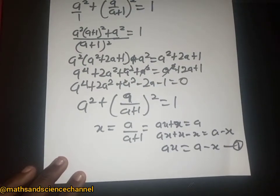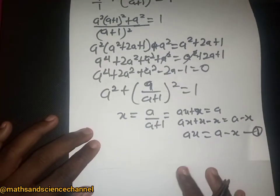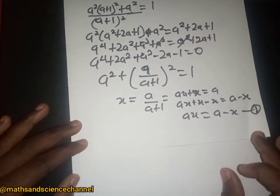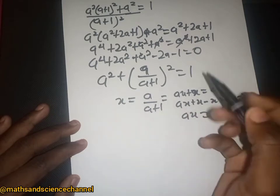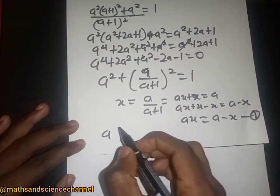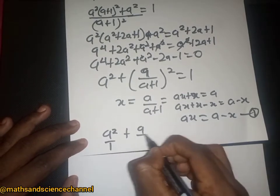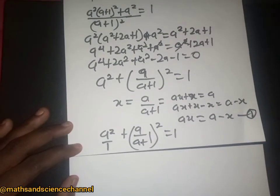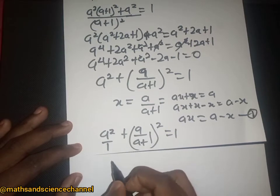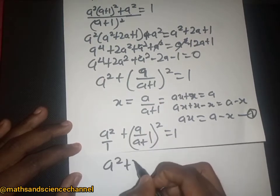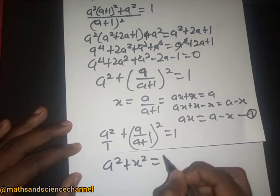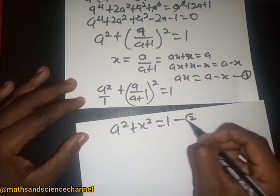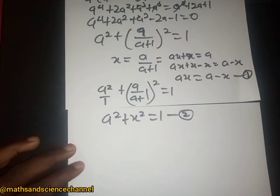Now we want to obtain a second equation to find a and x. Since x equals a over (a plus one), from the general equation we have a squared over one plus a over... being equal to one. This is just represented by x, so we have x squared equal to one. Let's call this equation two.